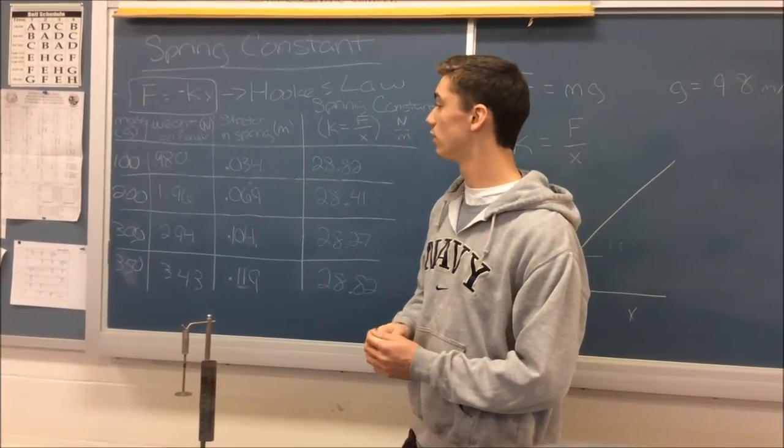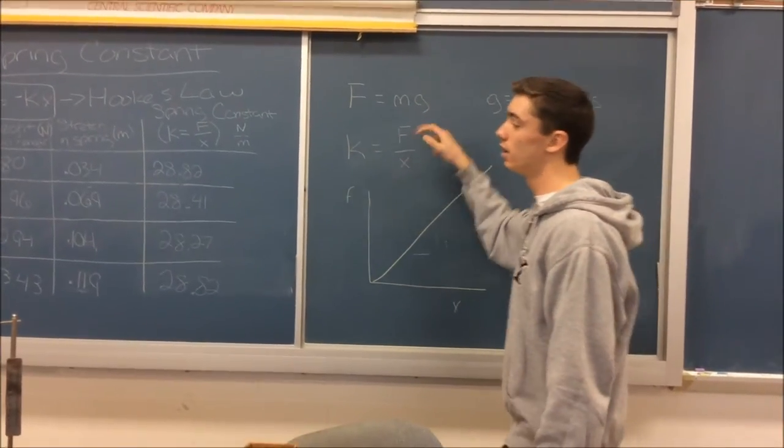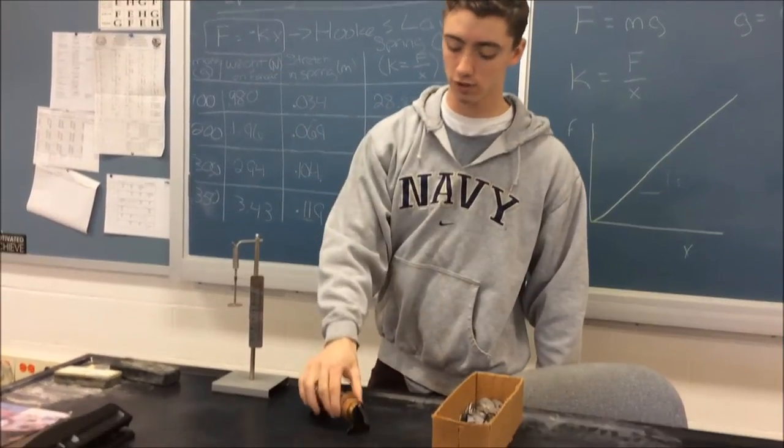In order to find your force, you have to do your mass times 9.8, which is gravity, represented by this equation here: force equals mass times gravity. That will find your weight on the hanger in newtons. So for the first trial,